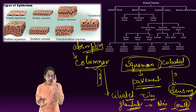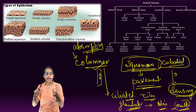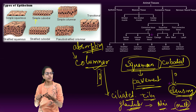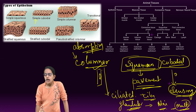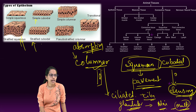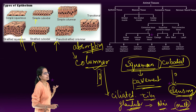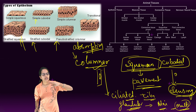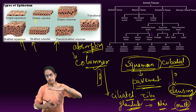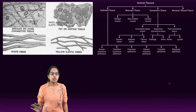Next is stratified epithelium. The same three classifications — squamous, cuboidal, and columnar — apply to stratified as well, giving us stratified squamous, stratified cuboidal, and stratified columnar. As the name suggests, stratified means more than one layer. These tissues have multiple layers of epithelium, and in certain cases the upper layer can be made of dead squamous epithelial cells. This makes them tough, protecting inner layers from mechanical injury.